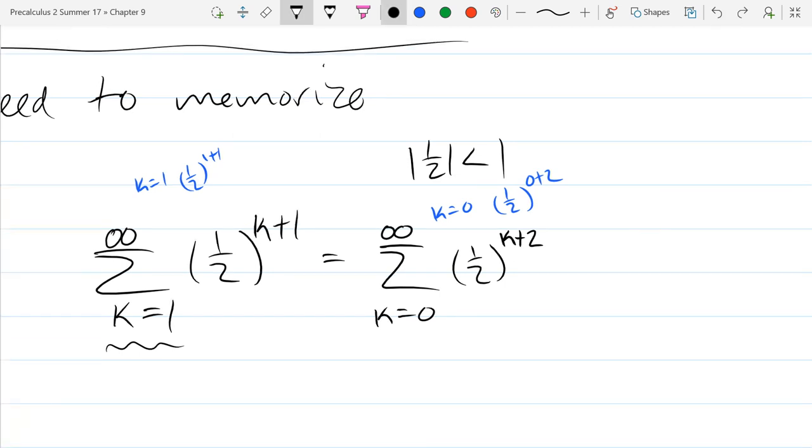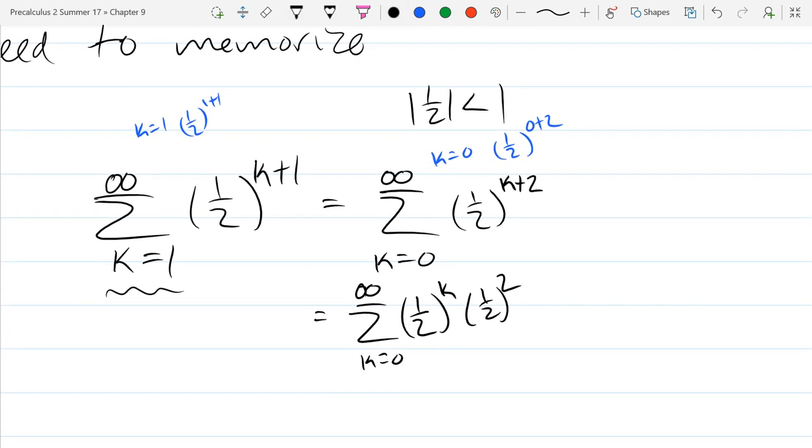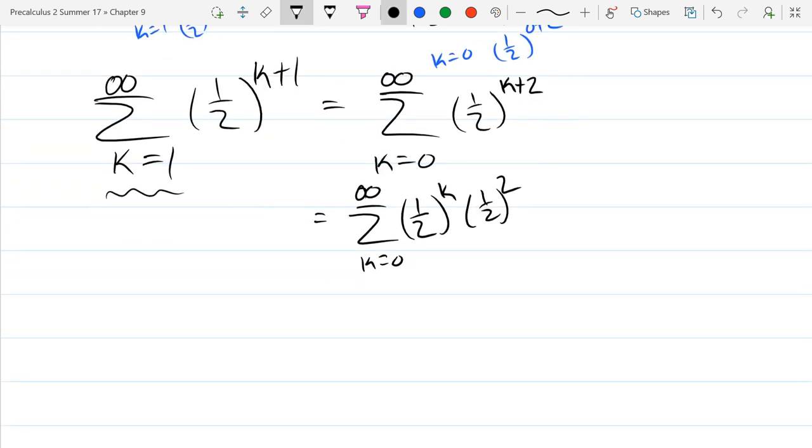Just a little bit of algebra here. This is 1 half to the k times 1 half squared. Remember, when the bases match you add the powers, and you can go the other direction. So we split that apart. Now we're going to use constant multiple rule. That 1 half squared we can move out front. We have to keep this term here because it's not constant - it's going to change.